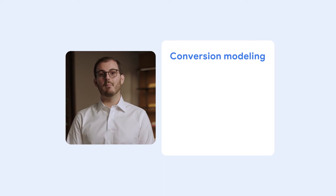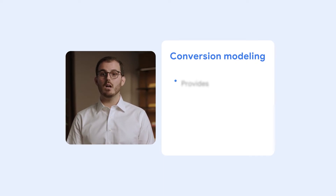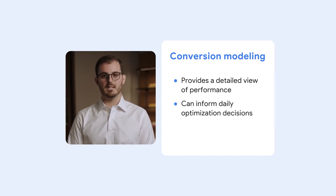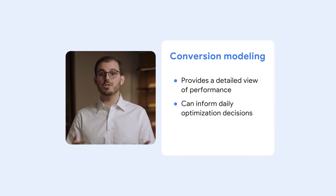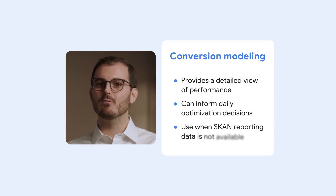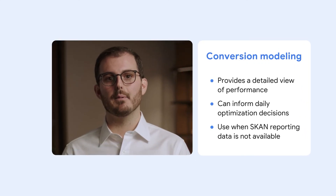That means SKAN reports are less useful for real-time, granular insights and optimizations on a daily or weekly basis. Conversion modeling might be more similar to the traditional reporting that you might be used to. It provides a more detailed view of campaign performance to help you make more informed optimization decisions, like which ad creatives are working best. One of the key benefits of conversion modeling is to use it when SKAN reporting data isn't available, especially to track what users do after they install your app. If you're looking for reporting that is more indicative of the full value of a user across your app's conversion window, you might want to lean towards Google conversion modeling to supplement your understanding of performance.